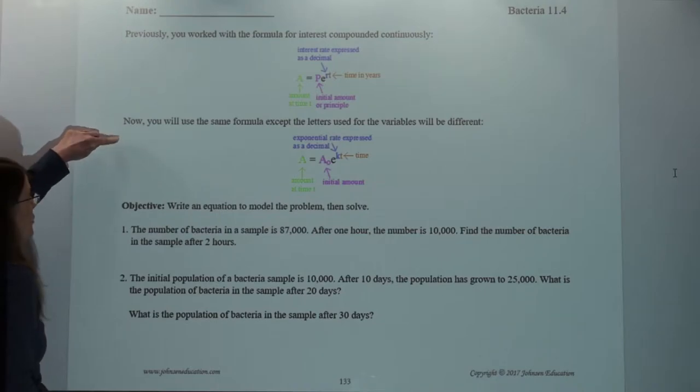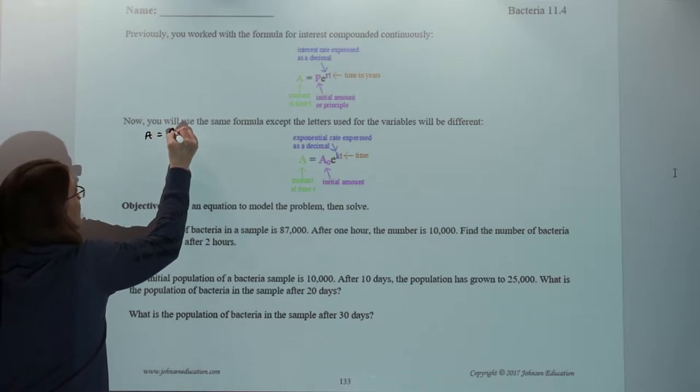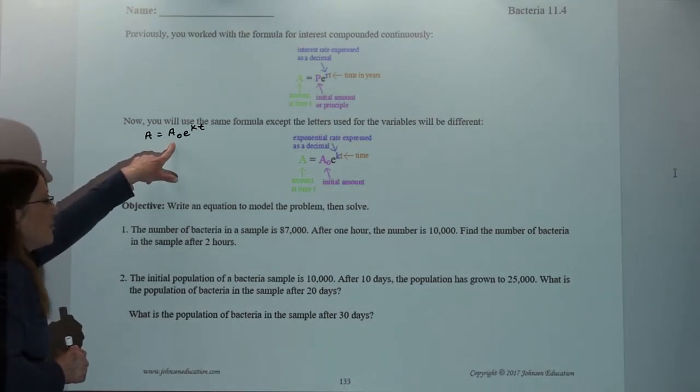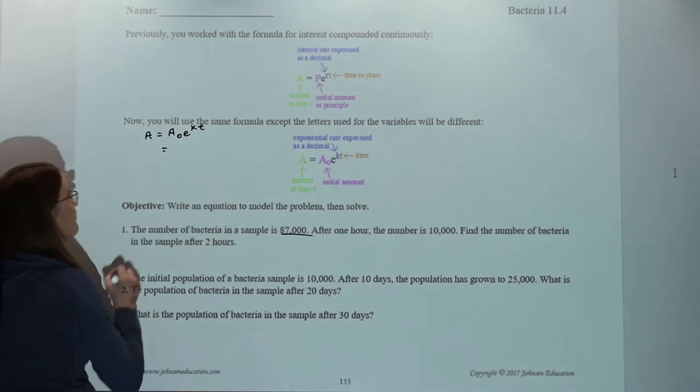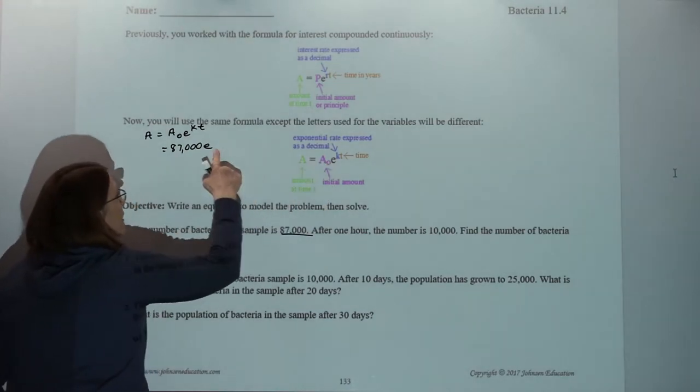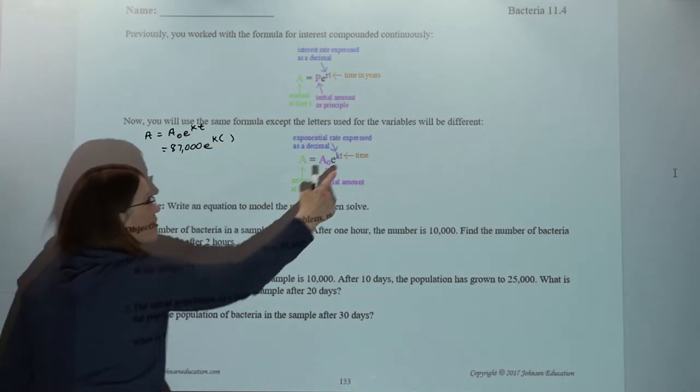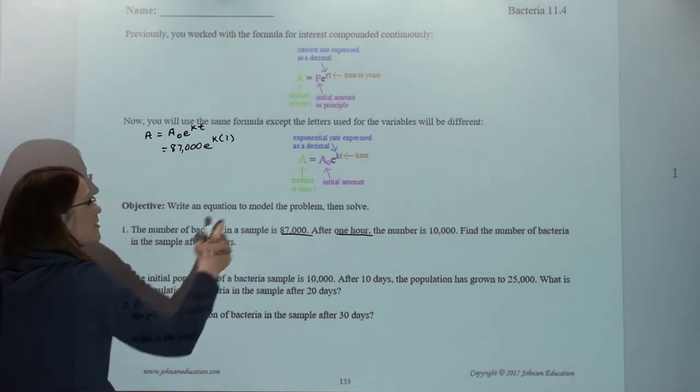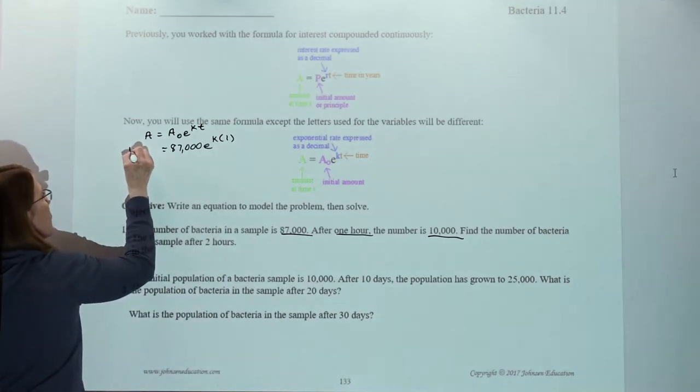Now, we're going to write it up here. So I'm going to start with, here's my formula, and let's substitute our values. Well, what was our initial amount? That's usually the easiest to find. The initial amount was, well, the number of bacteria in a sample is 87,000. Now we've got our E. K is our exponential rate. We don't know that yet. But we do know T, which is our time, because it says after one hour. So I'll put a one in here. And then what's our amount at time T? Well, think of it as your ending balance. That's what I do. We'll put 10,000 here.